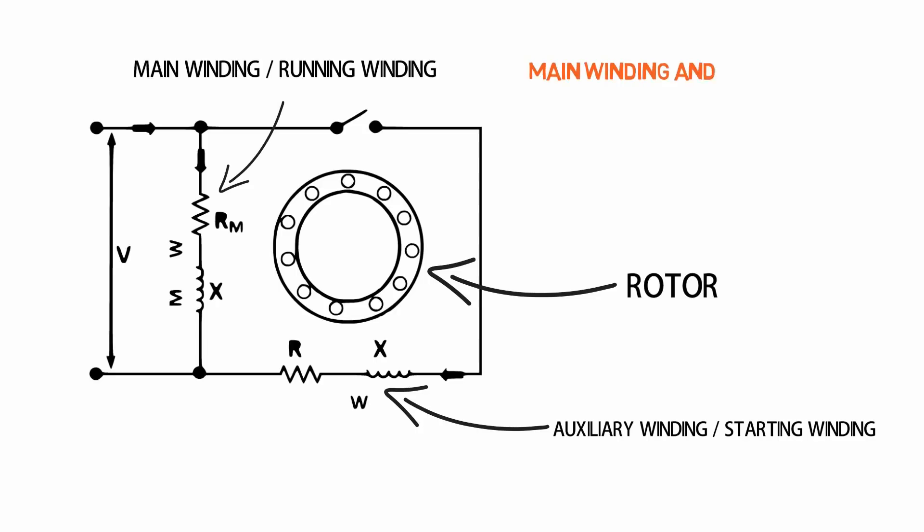Main winding and auxiliary winding are displaced 90 degree in space like the winding in a two phase induction motor.